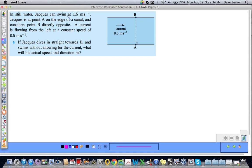In still water, Jacques can swim at 1.5 meters per second. Jacques is at point A on the edge of a canal. So Jacques is right here and considers point B directly opposite. So he's standing here considering point B. A current is flowing from the left at a constant speed of 0.5 meters per second. So the current is going this way as shown. If Jacques dives in straight towards B and swims without allowing for the current, what will his actual speed and direction be?